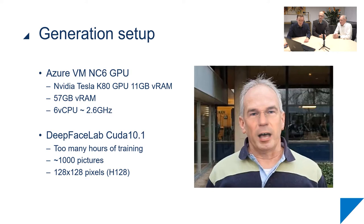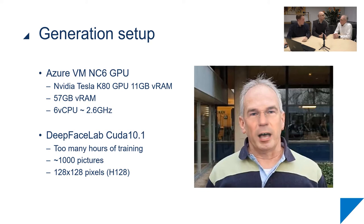We then spun up an Azure VM specifically for GPU-intensive tasks. You can see the specs: 11 gigabytes of video RAM and a lot of normal RAM. We also had many more pictures of Hans, which is very important — the more pictures, the better. The final video took around 36 hours to train. The loss metric — basically how good the quality is — was at 0.6, but for optimal results you should go below 0.09. If we'd let it run for another couple of days it might have been even better, but at some point we decided we'd proven our point.